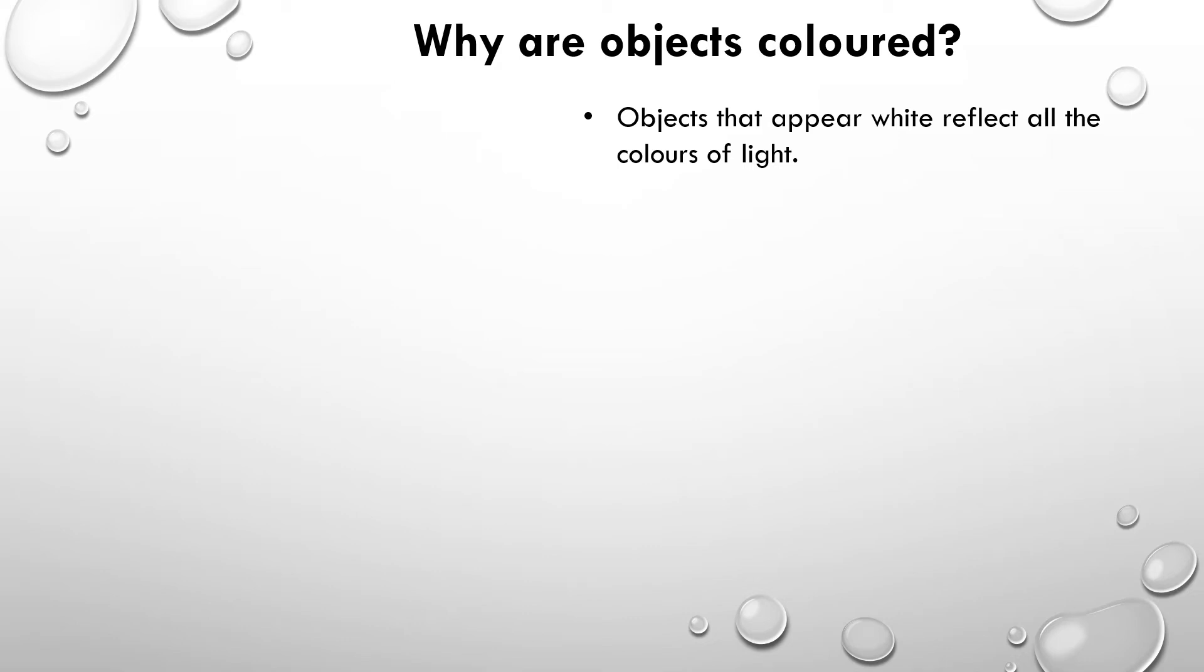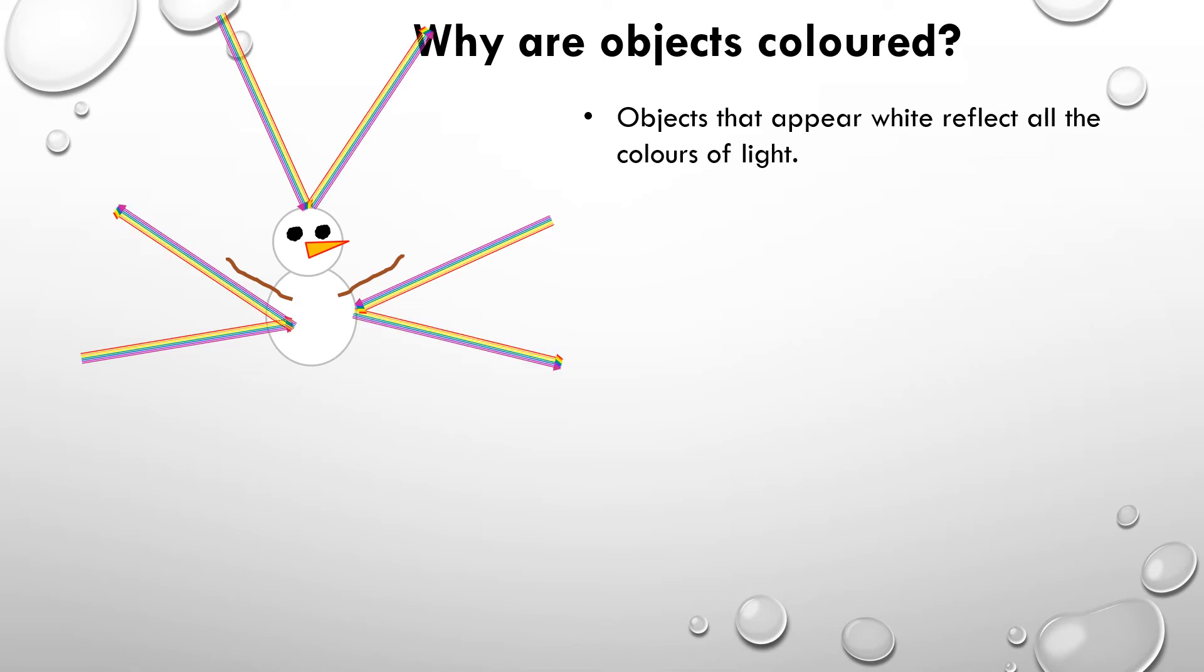Objects that appear white are the opposite to objects that appear black. A white object, so here we have a snowman. Once the light hits this white object, this white light, this rainbow colour of light, it will bounce back off the object not being absorbed.